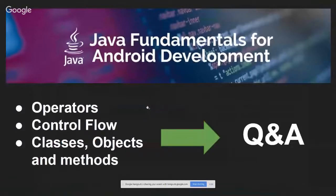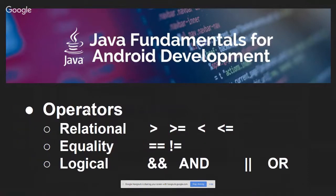The first things you learned in Java Fundamentals lesson one are operators, control flow, classes, objects, and methods. For operators, there are three types: the relational ones — greater than, greater or equal, less than, and less or equal; the equality ones — equal to and not equal to; and the logical ones — AND and OR. The double ampersand is the symbol for the AND operator and the double bar is the OR operator. We use operators to compare expressions and later control the flow of our code.